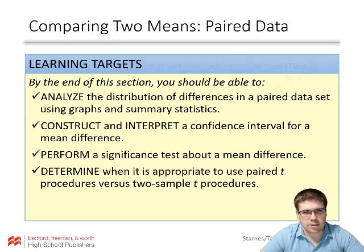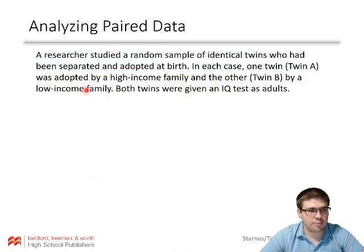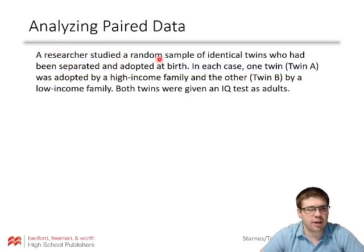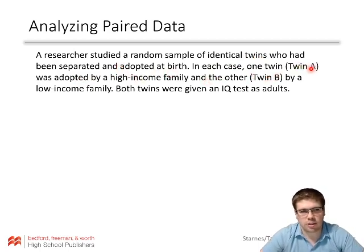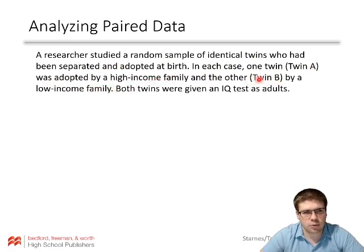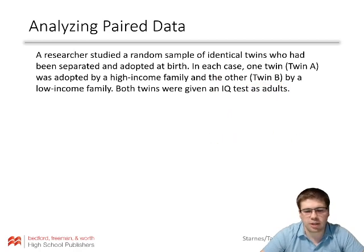Let's start with an example. A researcher studied a random sample of identical twins who had been separated and adopted at birth. In each case, one twin — twin A — was adopted by a high-income family, and the other twin — twin B — by a low-income family. Both twins were given an IQ test as adults.